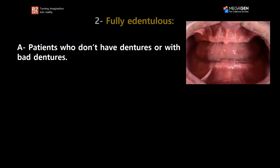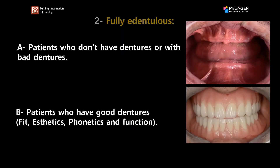We need to know more about the fully edentulous protocol for the matching. I would like to divide fully edentulous cases into two different sections. Number one would be patients who don't have dentures or with bad dentures, and number two would be patients who do have good dentures. These are the two different categories, and let's see how we manage each one.